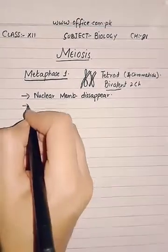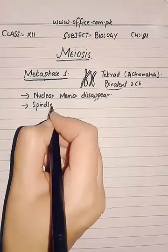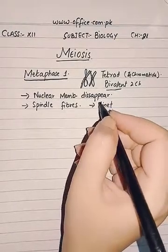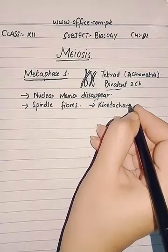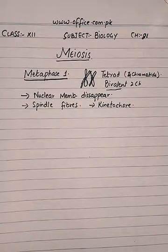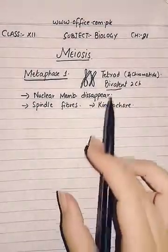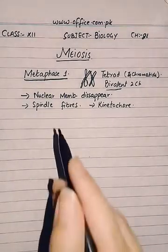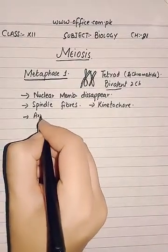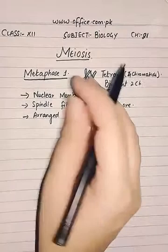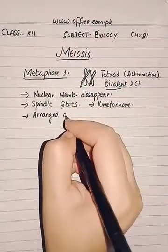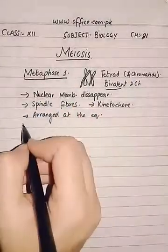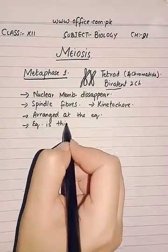The spindle fibers are formed. Similarly, the kinetochore fibers, just as in mitosis, will attach to kinetochore proteins, and the spindle fibers originate from both poles of the cell. The sister chromatids are arranged at the equator — the bivalents or tetrads that are formed will be arranged at the equator.